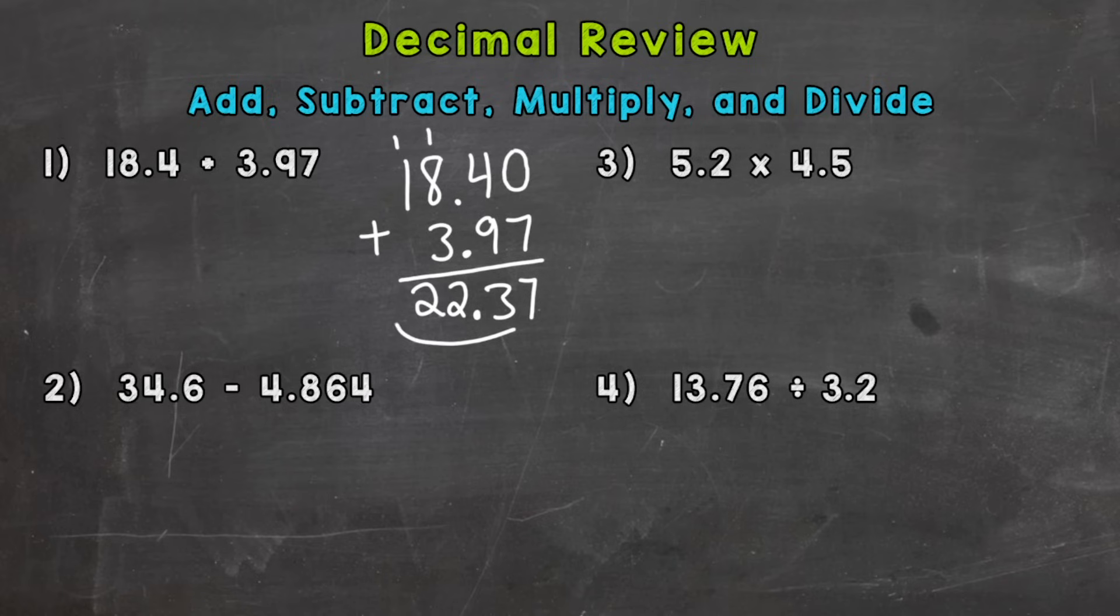So our answer is 22.37. Now let's take a look at our original problem. With decimals, it's good to always see if your answer makes sense and we can use estimation. So this number, 18.4, is around 18. And the second number, 3.97, if we were to round that to the nearest whole, it would be around 4. So 22 is a good estimate. So our answer, 22.37, is a reasonable answer. If you put the decimal in the wrong place or forgot the decimal, it should tell you that something went wrong because that answer doesn't make sense.